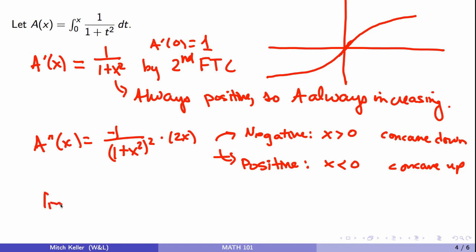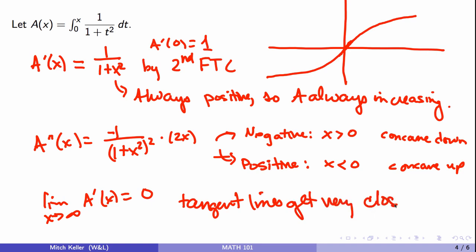But we can see certainly that the limit as x goes to infinity of A prime of x is 0. So the tangent lines get very close to horizontal as x gets big. And it turns out that this function does really have horizontal asymptotes, two of them.